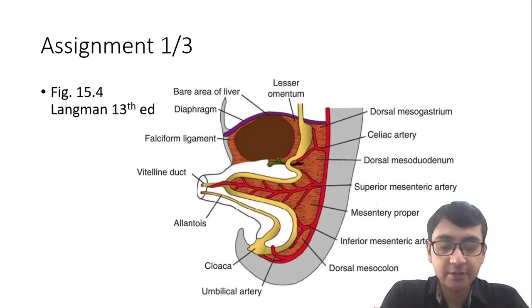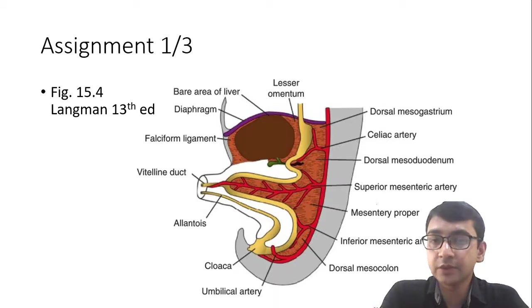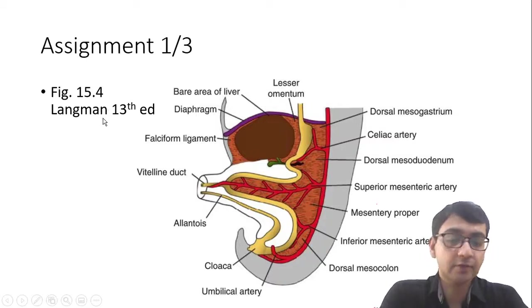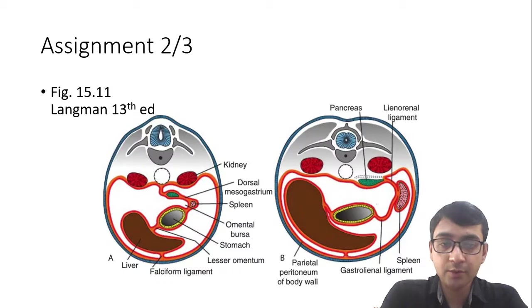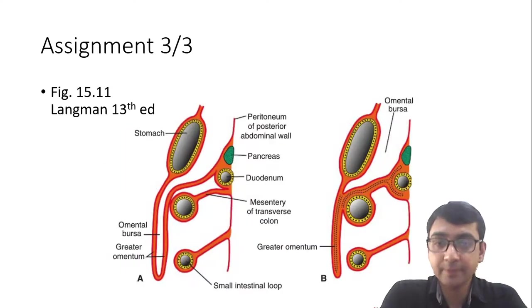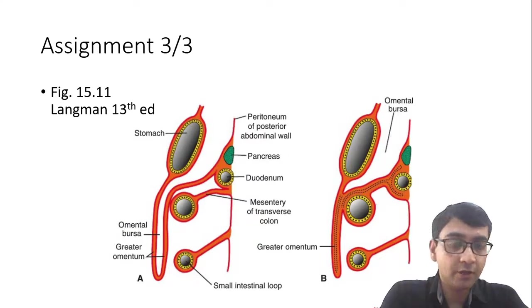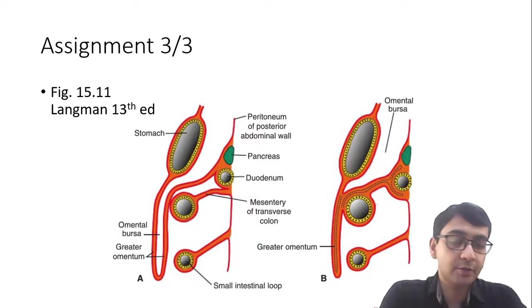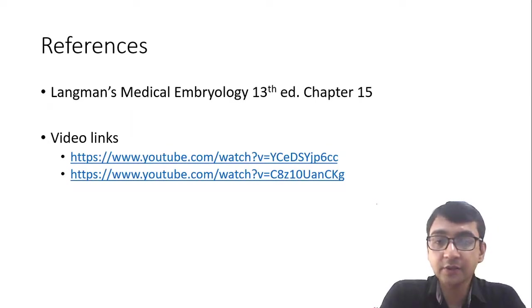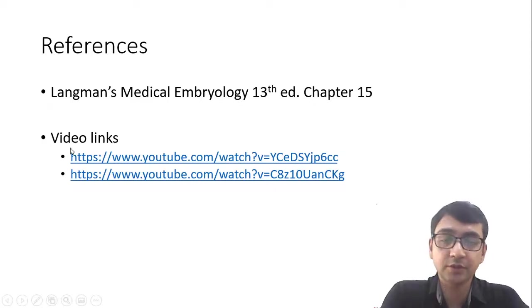We will discuss all of this in much more detail in the main lectures. For the embryological practical, you have an assignment of three pictures to draw. I have given the references from Langman. Assignment number one, assignment number two, and assignment number three — you have to draw all three pictures in your embryological practical copy. If you don't have your copy, draw on plain paper and paste it in when you return to college. Please post any queries in Google Classroom. Thank you so much.